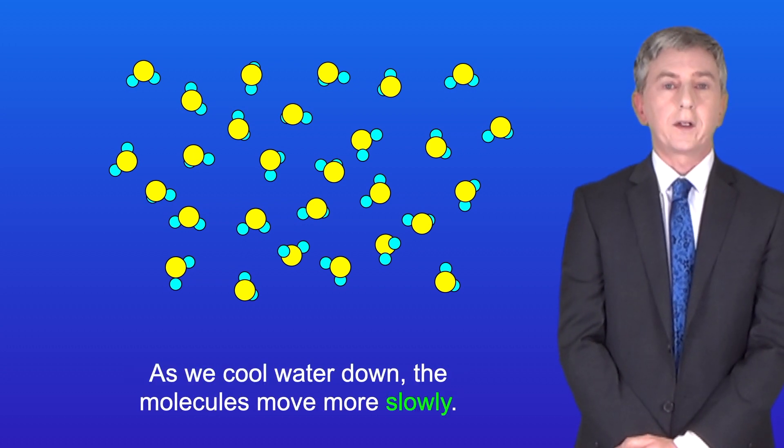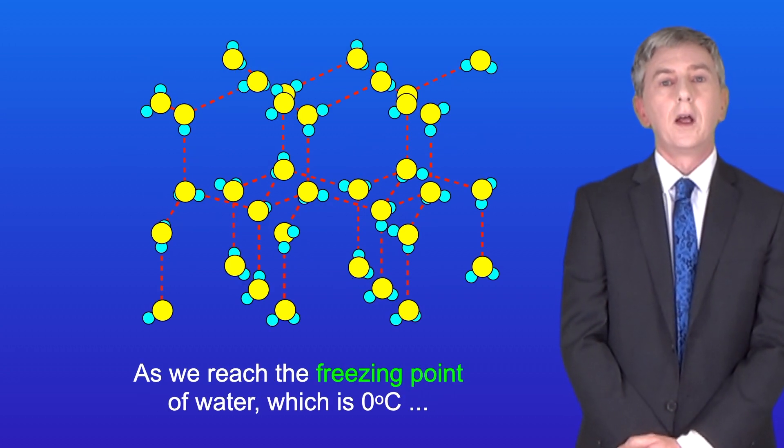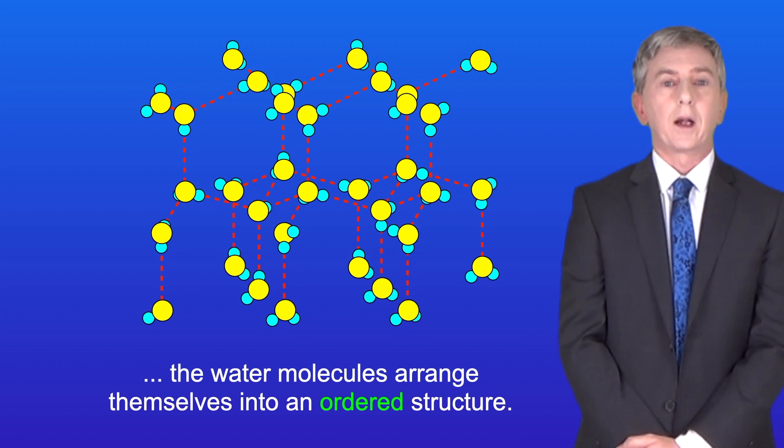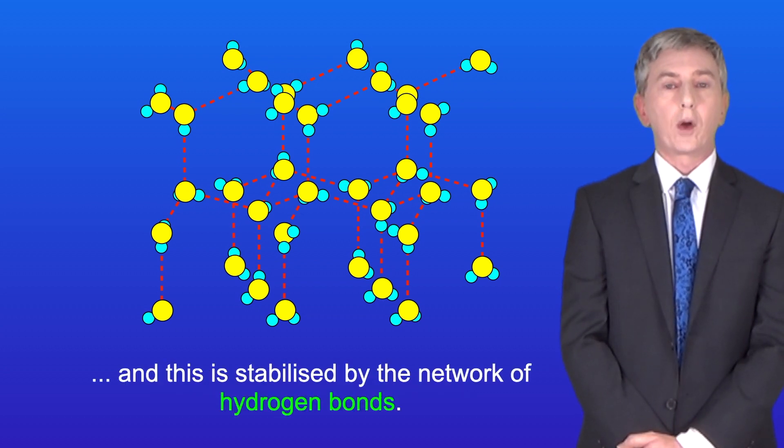As we cool water down, the molecules move more slowly. As we reach the freezing point of water, which is zero degrees Celsius, the water molecules arrange themselves into an ordered structure. This ordered structure is ice, and this is stabilized by the network of hydrogen bonds.